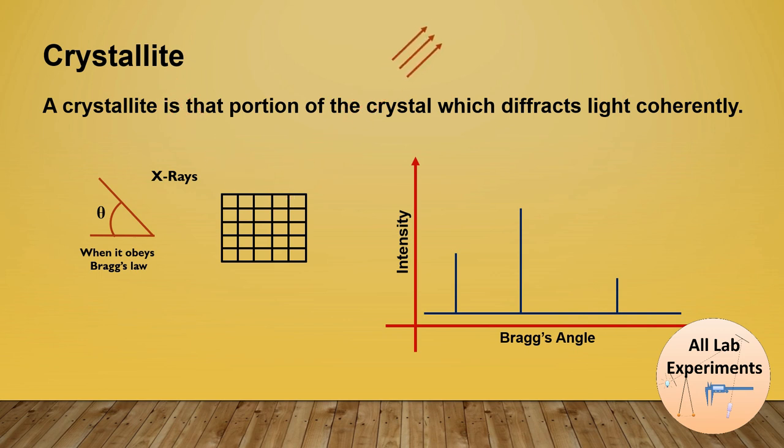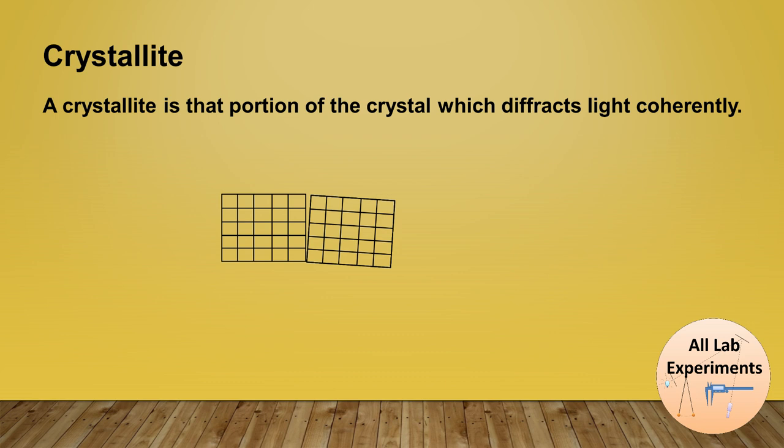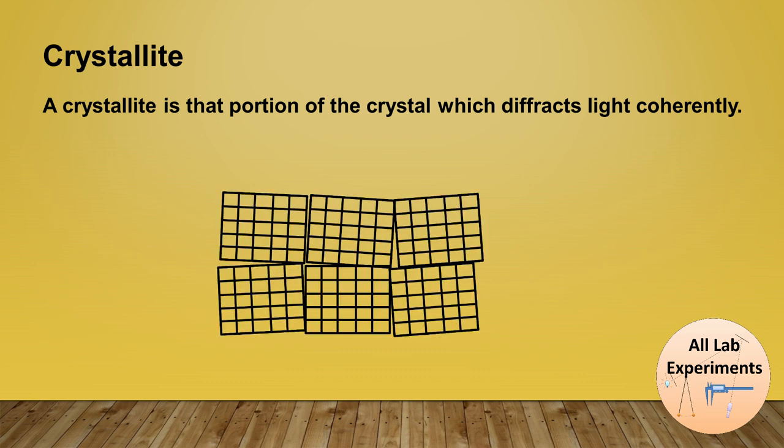But now let us consider there is not just one part of the crystal but there are two or similarly there are many parts of the crystal. During crystal growth, because of point or line defects, the orientation of the crystal may change somewhat.